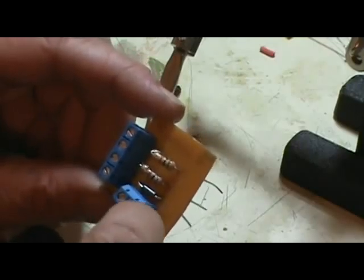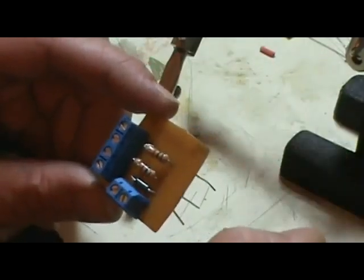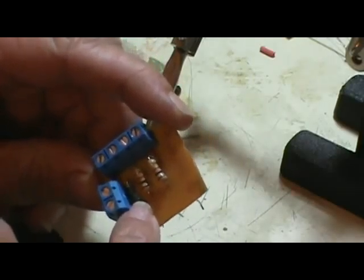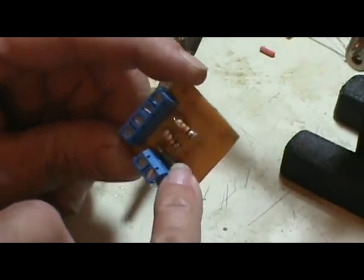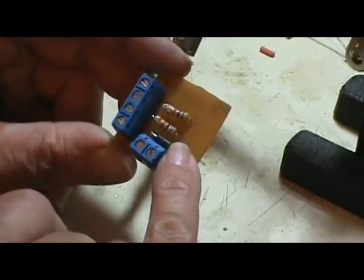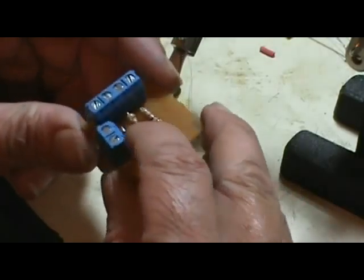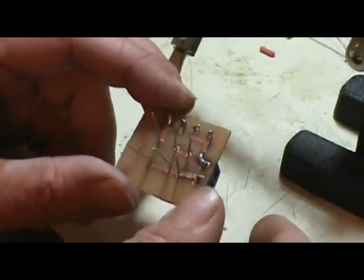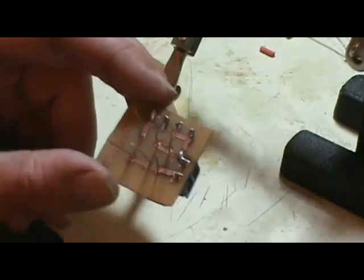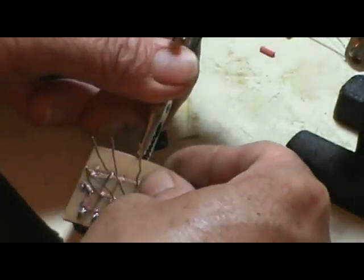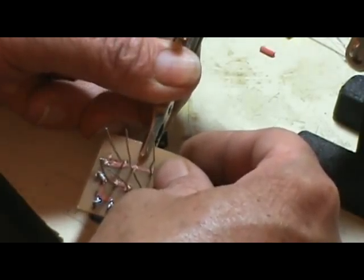So a diode always points on a schematic toward the ground. The negative is the little stripe. I don't have the greatest light, it's kind of hard to see. There's a stripe on one end. That's your cathode, that's the negative. So I have the other side without the stripe up here on my positive or where the plus was, so that everything will function correctly.